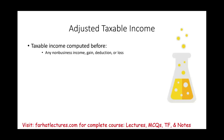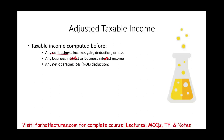Adjusted taxable income is taxable income computed before taking into account any non-business income, non-business gains or deductions. You also do not take into account business interest income or business interest expense — because the whole topic is about the interest deduction. You also do not include net operating loss deductions, which typically come from a prior year.